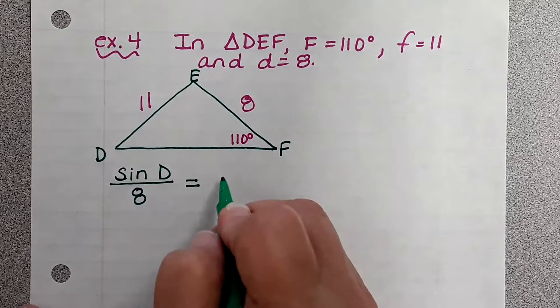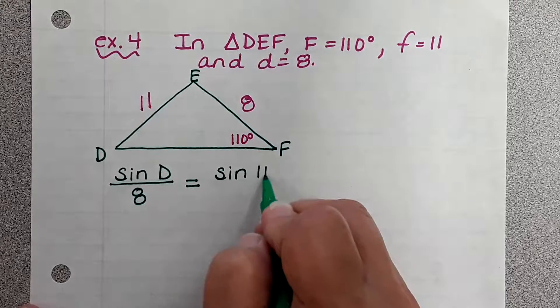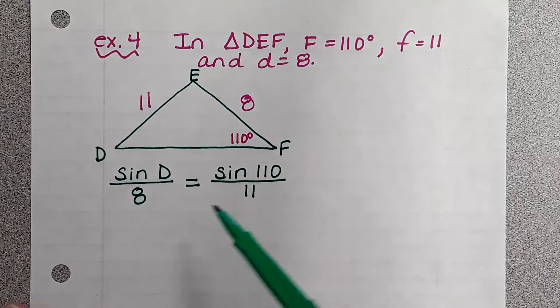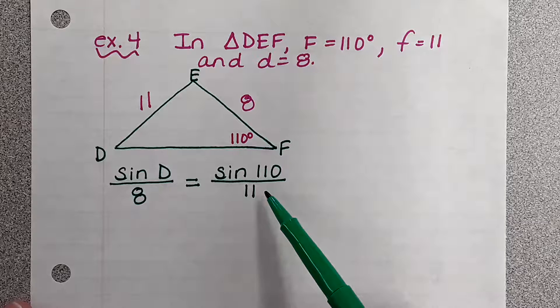The other information they gave me was F. So I'm going to use sine of F, which is sine 110, over 11. You guys remember you always want to use the fraction that they give you, the one that they give you information for.